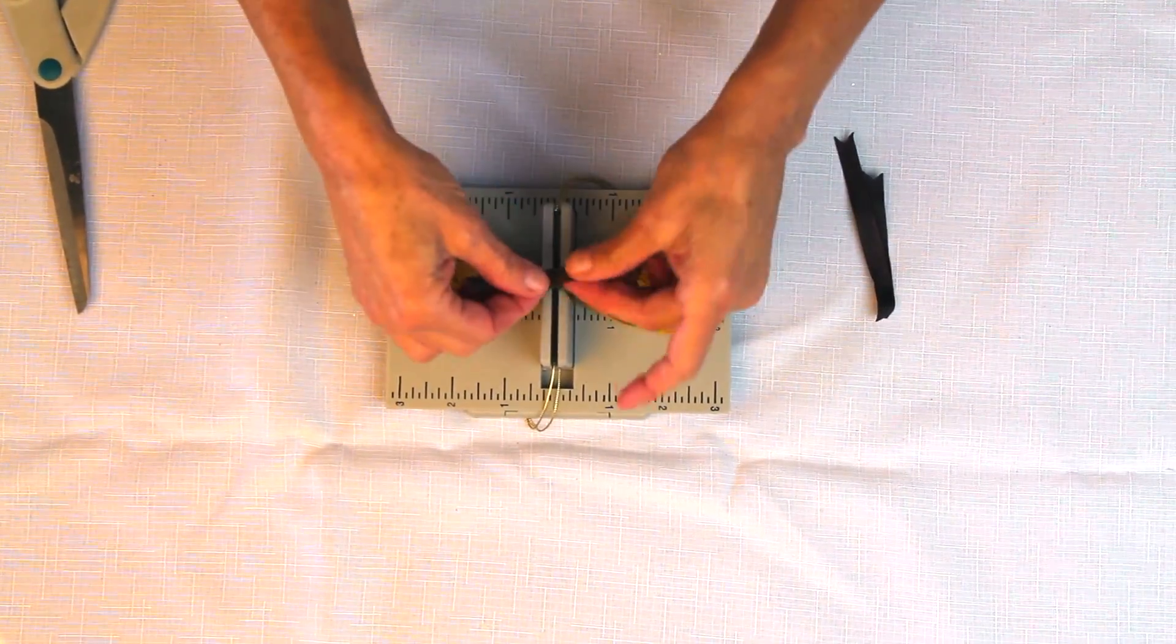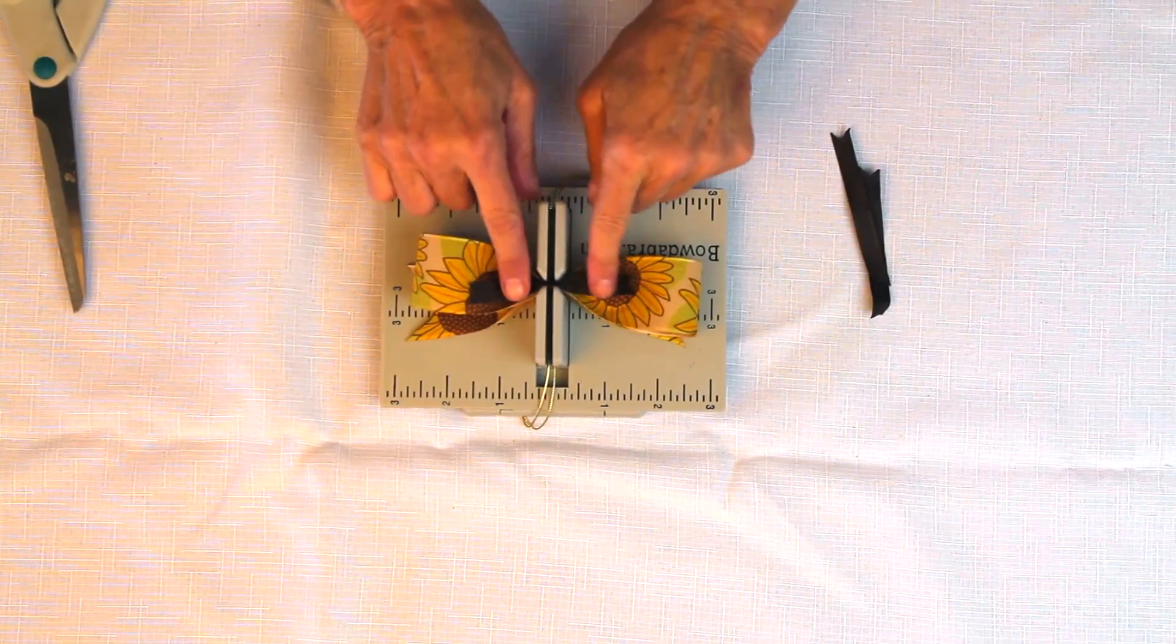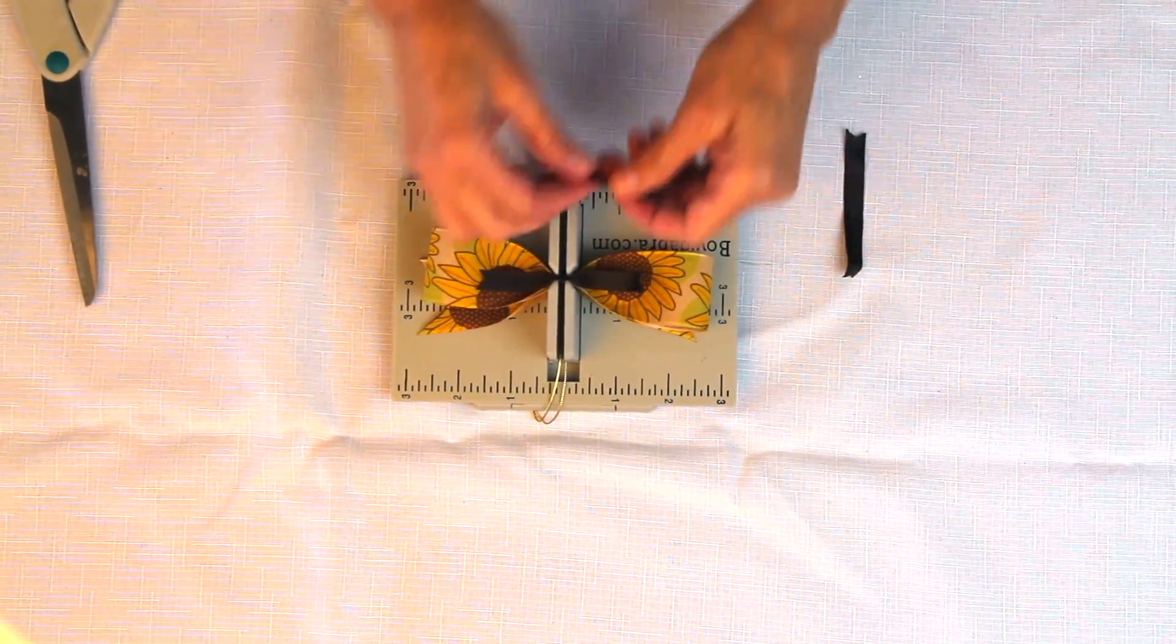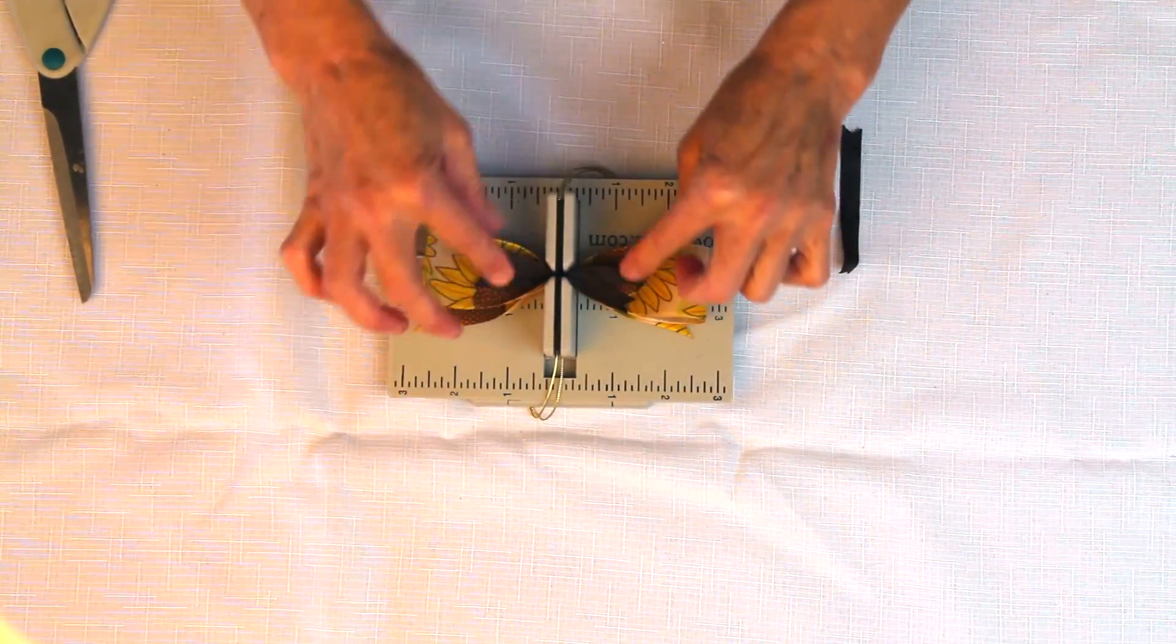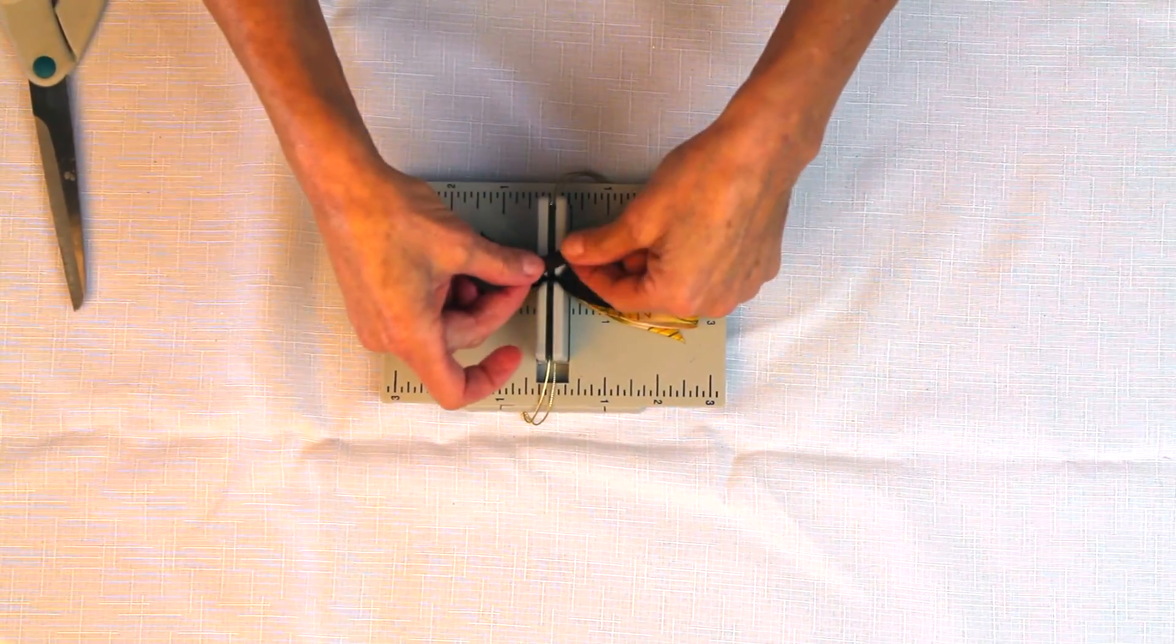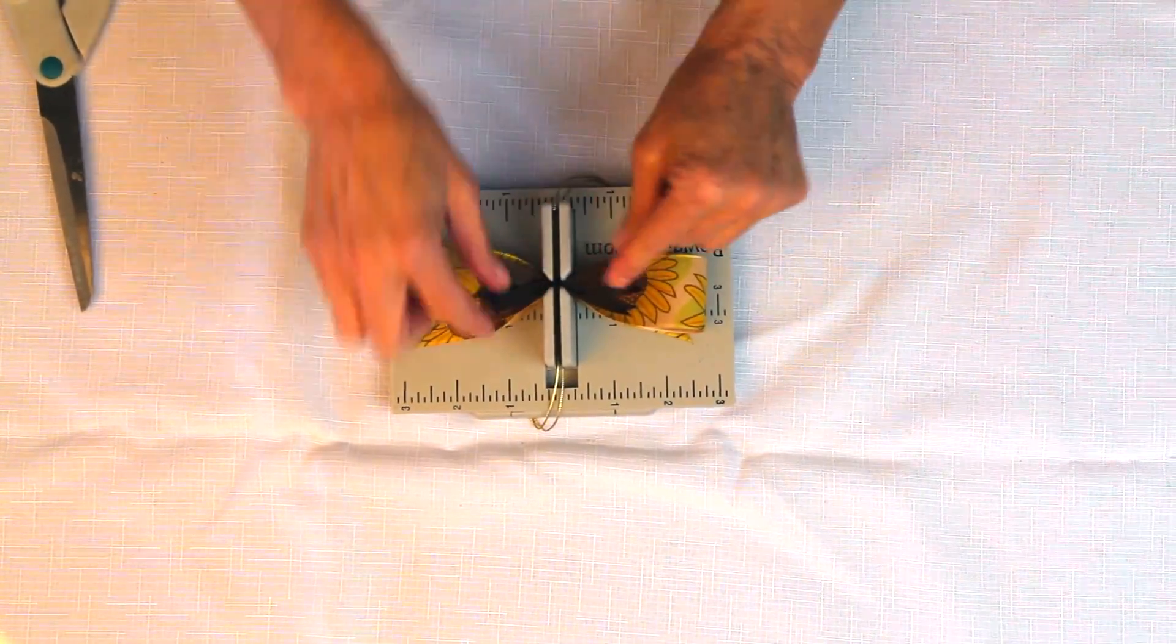Then I have these little strips of grosgrain that have been dovetailed and sealed. And I'm just going to put those in and I'm doing three, because having an odd number always looks better.